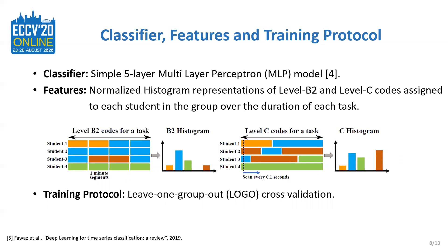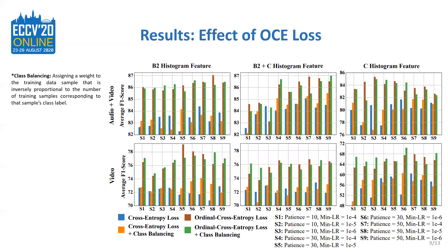For training the MLP models, we follow a Leave-1-group cross-validation protocol. Here we see the average weighted F1 score performance for four cases under different parameter settings. The blue and orange bars represent the performance of the cross-entropy loss function without and with class balancing. Similarly, the brown and green bars show the proposed ordinal cross-entropy loss function's performance without and with class balancing. For each parameter setting, we see little or no benefit when using the class balancing technique. However, we do see significant improvements in the overall F1 score performance when using the ordinal cross-entropy loss under the different parameter settings.